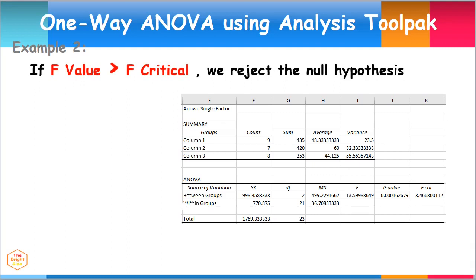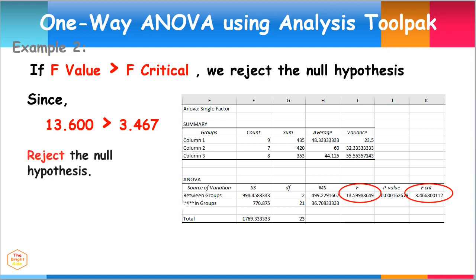Since 13.600 is greater than 3.467, we therefore reject the null hypothesis. We can conclude that the means of the three populations are not equal, and at least one of the means of the populations differs significantly.